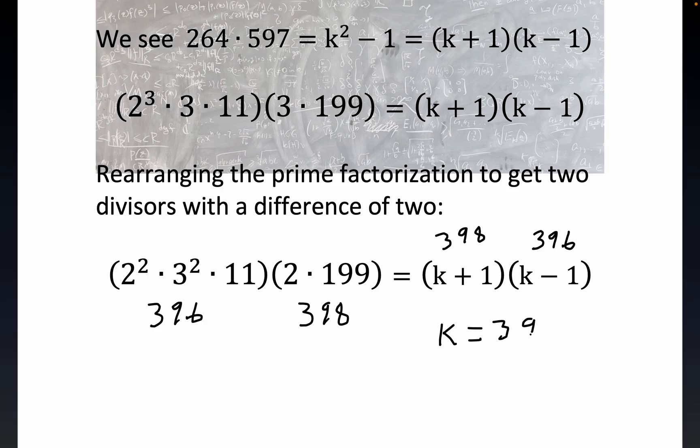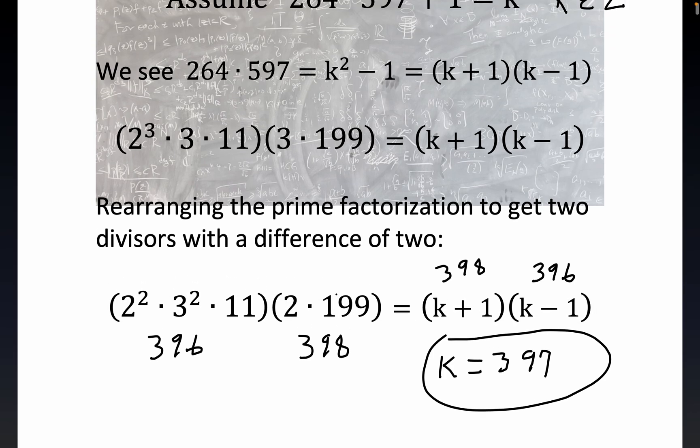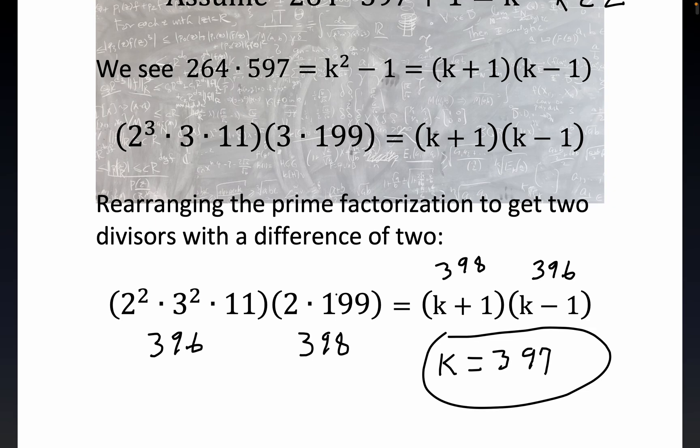That completes our work. And really, the hardest thing we had to do here was do prime factorization. And then we had to go through a rearrangement. Now, if this had not have worked out, had we not been able to rearrange the prime factorization to where you could get consecutive divisors that had a difference of 2, that's what this is. This object here, according to this, is going to have two divisors that are separated by 2, whose difference is 2.